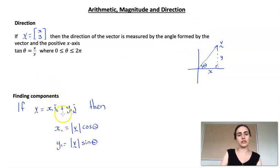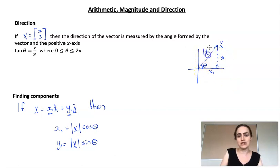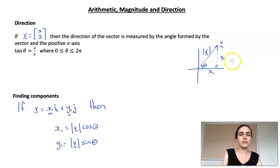The last part is finding components — working backwards to find x1 and y1 given the length and direction. Looking at the right-angled triangle: the hypotenuse is given by the magnitude of the vector. To find x1, that's the adjacent side from angle theta, so we use cosine: x1 equals the magnitude multiplied by cos theta. To find y1, that's the opposite side, so y1 equals the magnitude multiplied by sin theta.